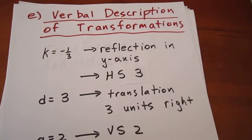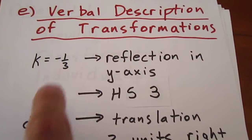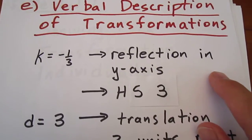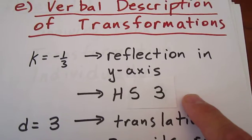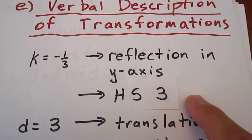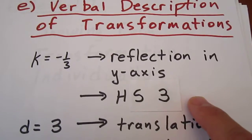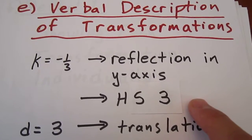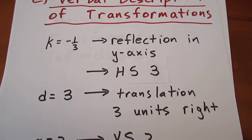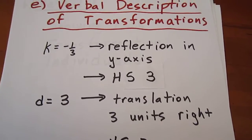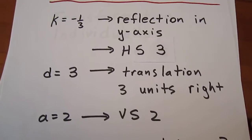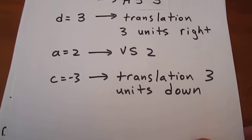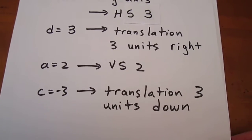And what that tells us is that the verbal description of transformations is as follows. k is negative 1 third. The negative k value means there's a reflection in the y-axis. The value of negative 1 third means that we're going to have a horizontal stretch, counterintuitive in a way, but a horizontal stretch by a factor of 3. We take the absolute value of the reciprocal for k. The d value of 3 tells us we'll have a translation 3 units to the right. The a value of 2 is consistent with what one might intuitively think, a vertical stretch by a factor of 2, and a c value of negative 3 means a translation of 3 units down.